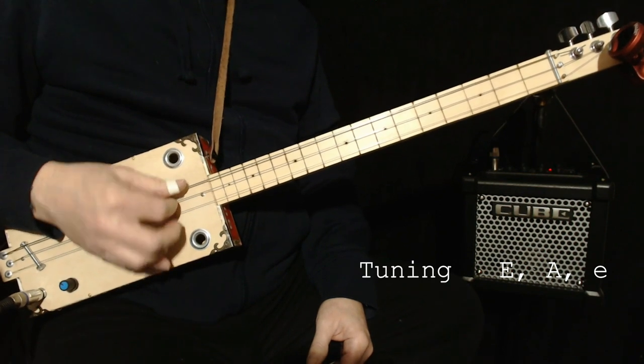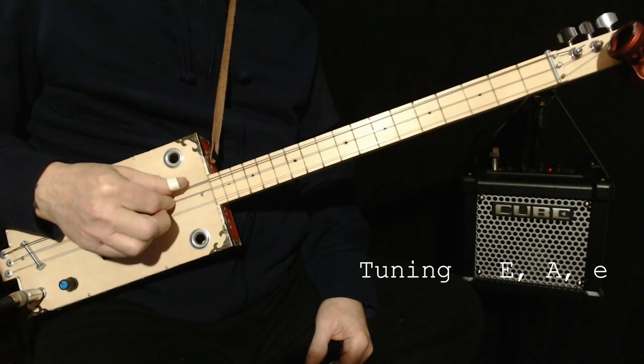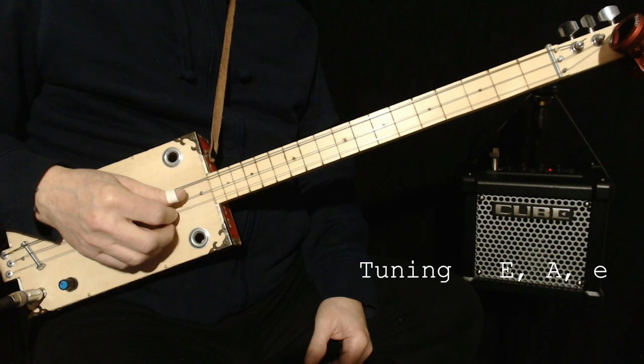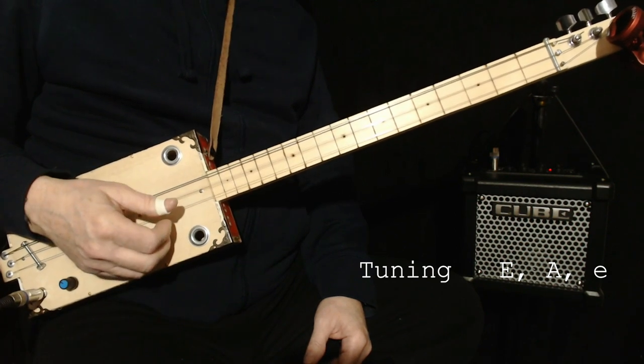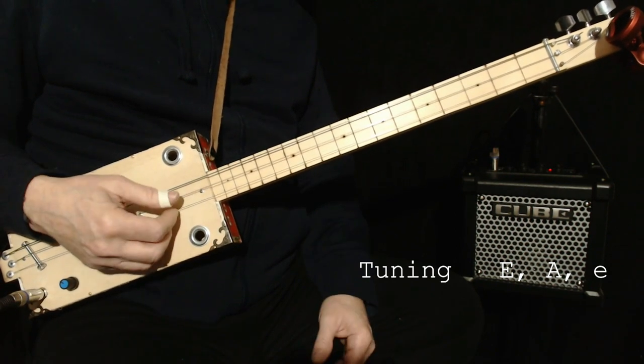So your power chord has moved from being these two strings, low and middle, to being the middle and the high string. That's your A chord. So now you're in the same key as the record.